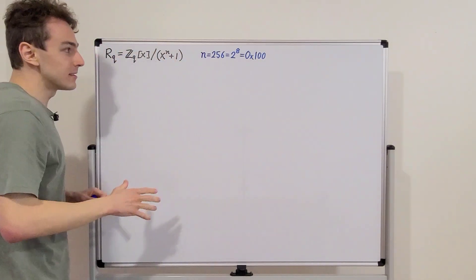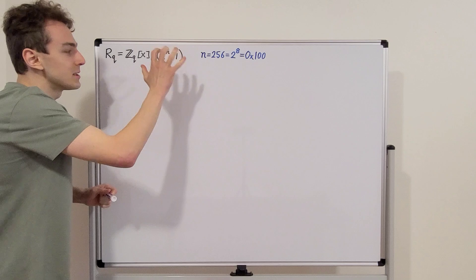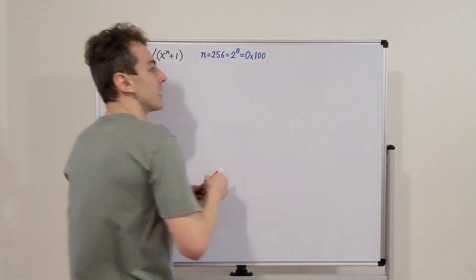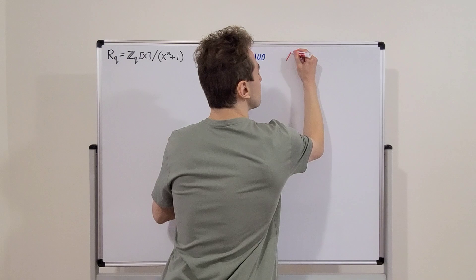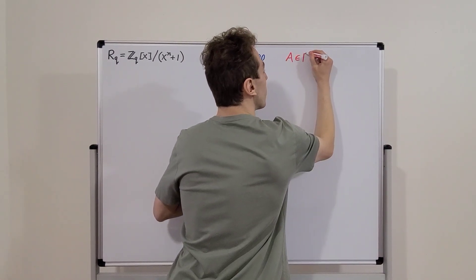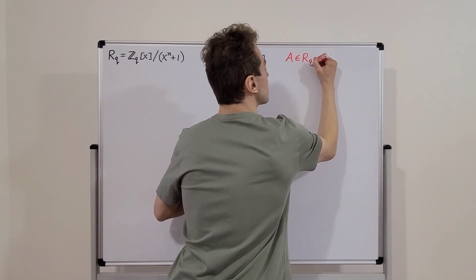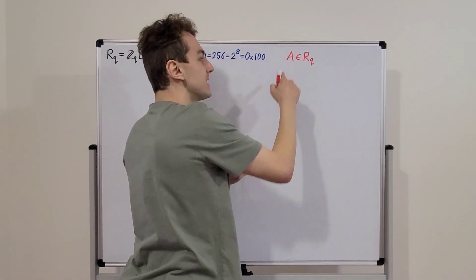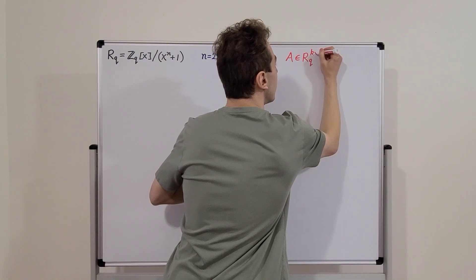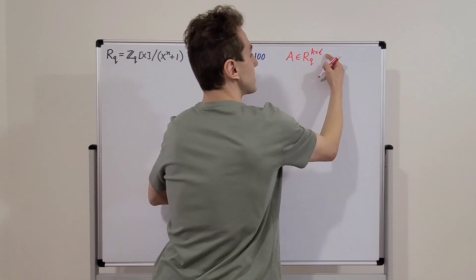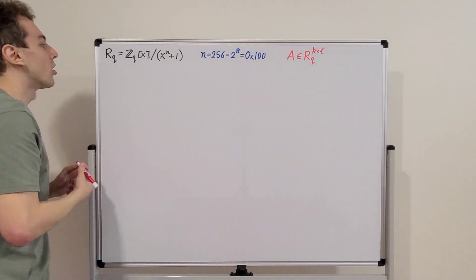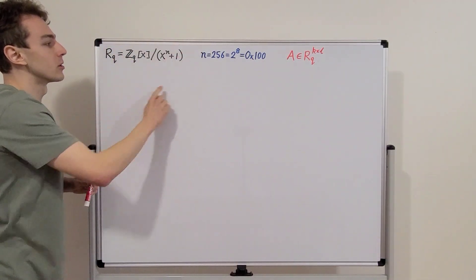The reason we are using this definition is because we need to define a matrix A. This matrix has entries which are elements of the polynomial ring R sub Q, and it has dimensions K by L. All of the entries in this matrix are elements of this polynomial ring.